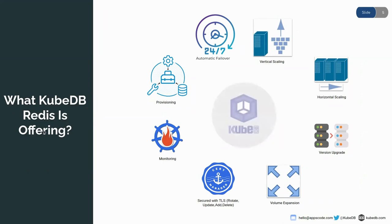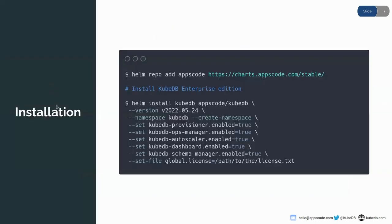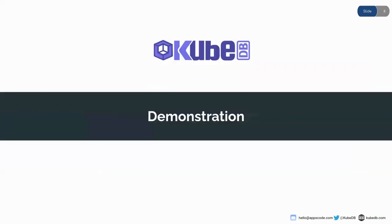Here are the resources. You can get a KubeDB license at license-issuer.appscode.com, and to learn more about KubeDB visit kubedb.com — our well-documented site. You can install KubeDB using the Helm commands found on kubedb.com. Now let's move on to the demonstration.